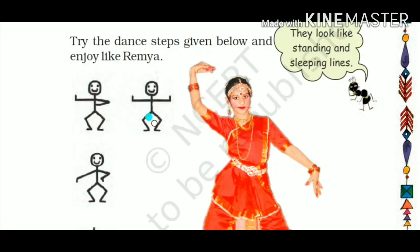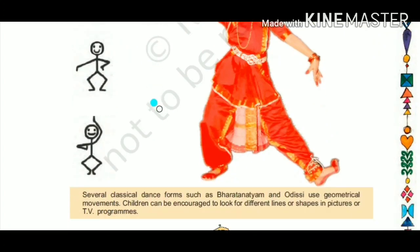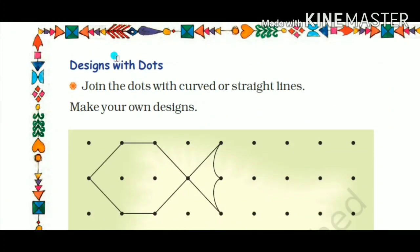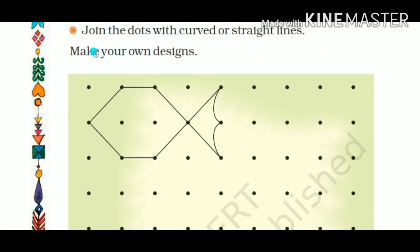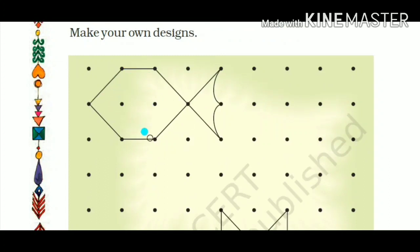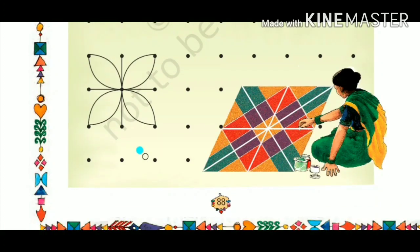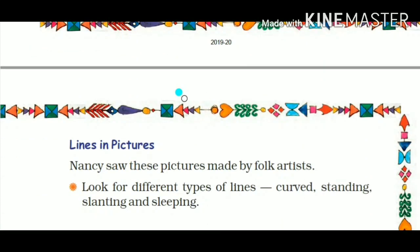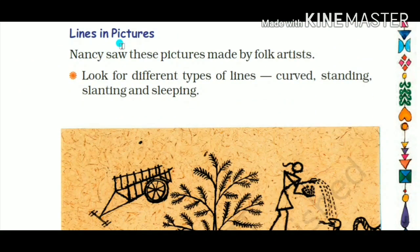Try the dance steps given below and enjoy like Raima. These figures are known as stick figures because they are made with thin straight lines — like dandiya sticks. You also have to join the dots with curved or straight lines to make your own Rangoli designs. See this fish design — you can make various Rangoli patterns by connecting dots.